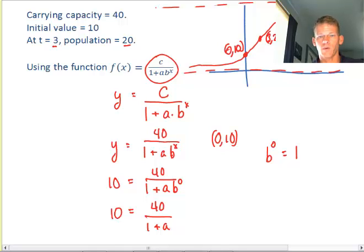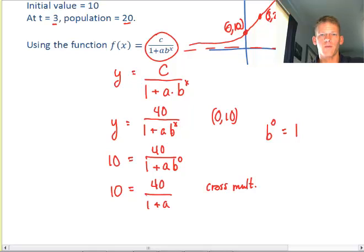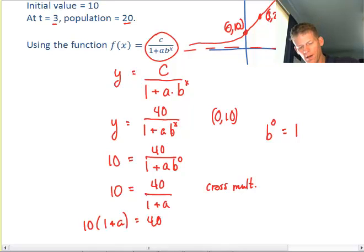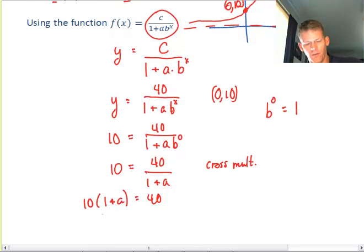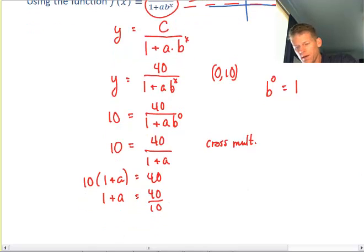a has to equal 3 to satisfy this equation. You can cross multiply and solve, but upon inspection, you can see that 3 has to be a value to make 40 divided by 1 plus a equal to 10. But let's cross multiply anyway. I have 10 times 1 plus a equals 40. Instead of multiplying the 10 through, I'm going to divide it. And now I'll have 1 plus a is equal to 4, or a is equal to 3.